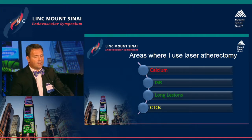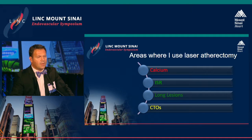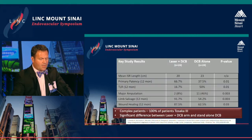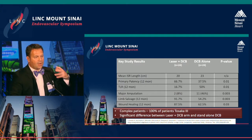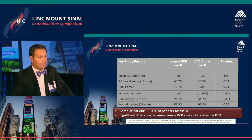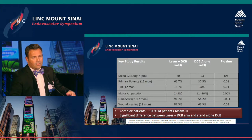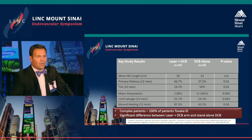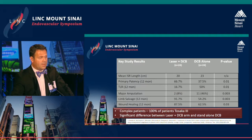For CTOs, it depends on how you cross in terms of whether I would use laser or any atherectomy device. Looking at this study with complex Tosaka 3 occluded segments, although you have to have a peripheral mindset when you look at these numbers — not a coronary mindset — the results are actually pretty good for laser and DCB. The combination works very nicely, and I think when Andre is done with the case you'll see a very nice result with the combination there as well.